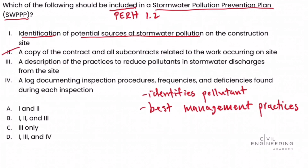The stormwater pollution prevention plan must also include a log documenting inspection procedures, how often inspections occur, and any deficiencies found during each inspection. It may also include modifications to the SWPPP to address better ways of doing things or to reflect changes as the site is developed further. The plan should be updated to capture any changes or improvements made. So option four is a valid choice.